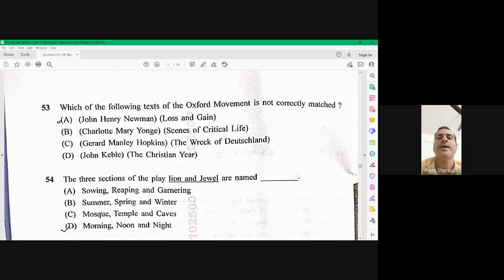Scenes of clerical life is by George Eliot. So B should be the right option. However, Charlotte Mary Young has not written scenes of critical life. So it's a controversial question. It may objection may come. But yes, once three options are correct, so B should be the right option. Otherwise, scenes of clerical life is written by George Eliot.